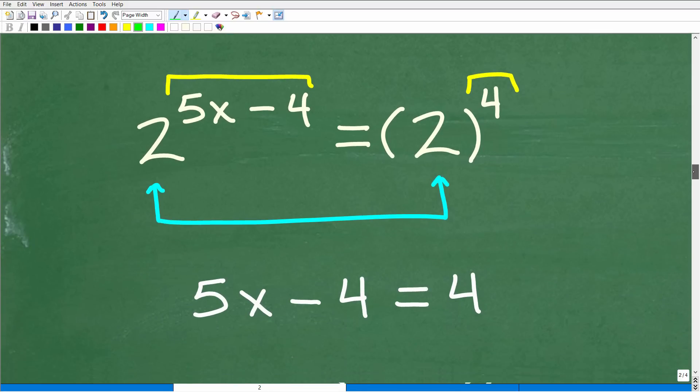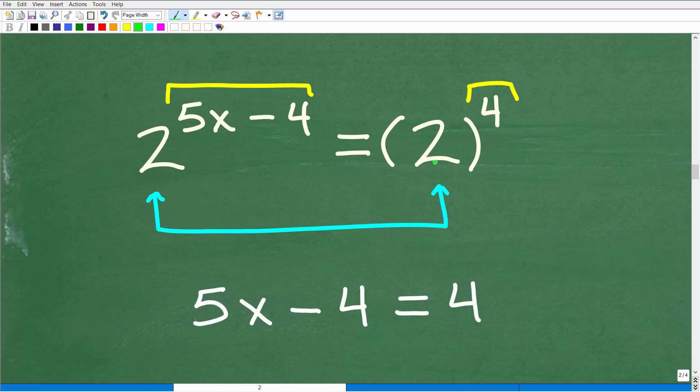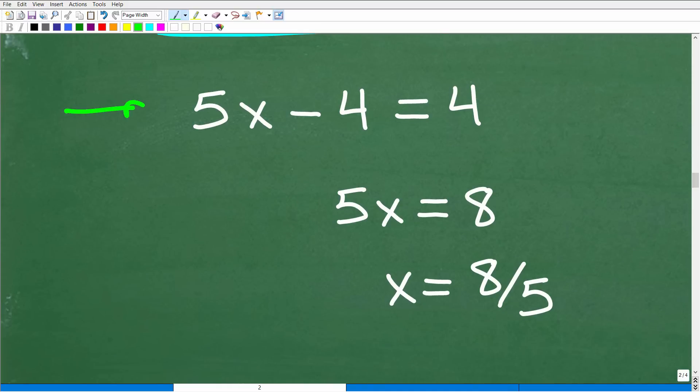So you're looking at the problem. You're like, oh yeah, 2 and 2. So these right here must be the same. So all we have to do is solve this basic equation. 5x minus 4 is equal to 4. And now we're back to like super basic algebra and we can solve this pretty easily. What we're going to do is just add 4 to both sides of the equation. So I get 5x is equal to 8. Then I'm going to divide both sides of the equation by 5 and I get x is equal to 8 over 5.